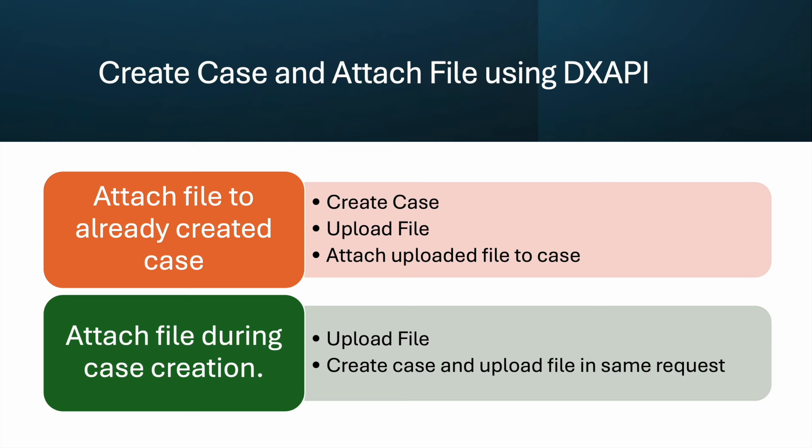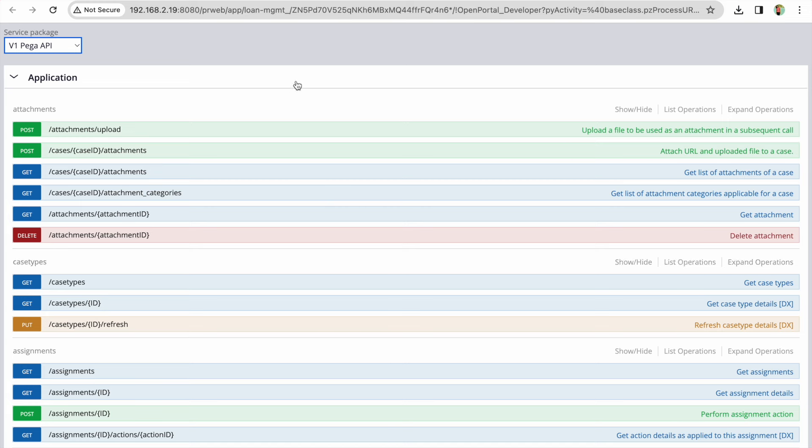Instead of making three calls, we can do it in two calls. First we upload the file, and once the ID is returned we use it in the create case call. So from scenario one, the create case and attach uploaded file to case combine into one request in scenario two. Let's go and I'll show you the APIs in Pega first, and then I'll demonstrate from Postman.